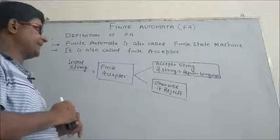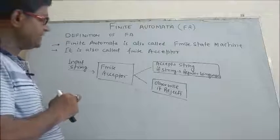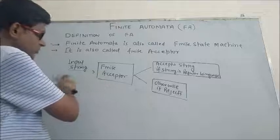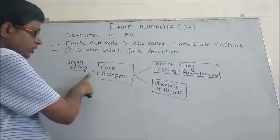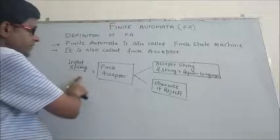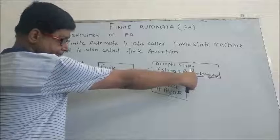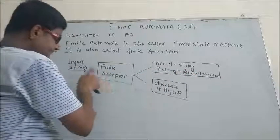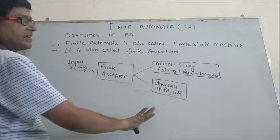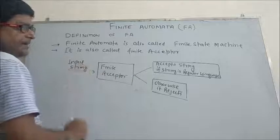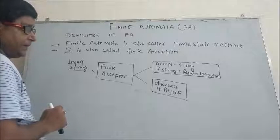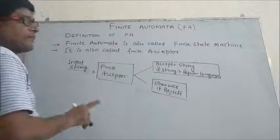Another very important term is 'finite acceptor.' A finite acceptor is a finite automata which takes an input string and decides whether that string will be accepted or rejected. The input string will be accepted only if it belongs to a regular language; otherwise it will be rejected. That means only regular languages can be accepted by a finite acceptor.